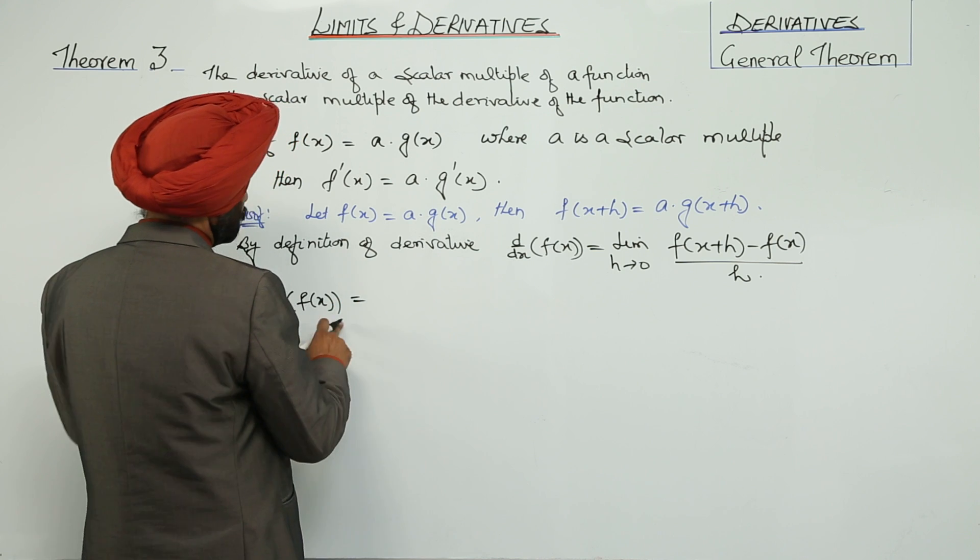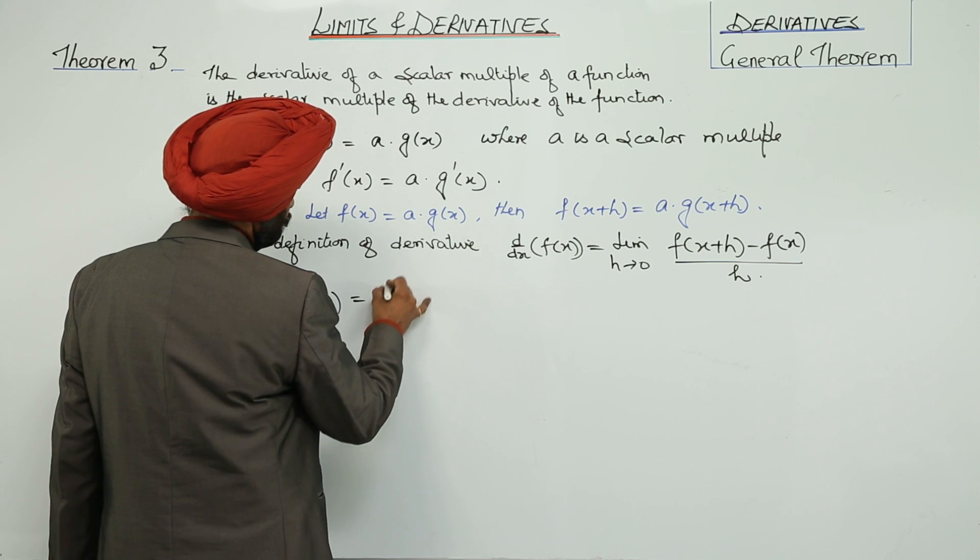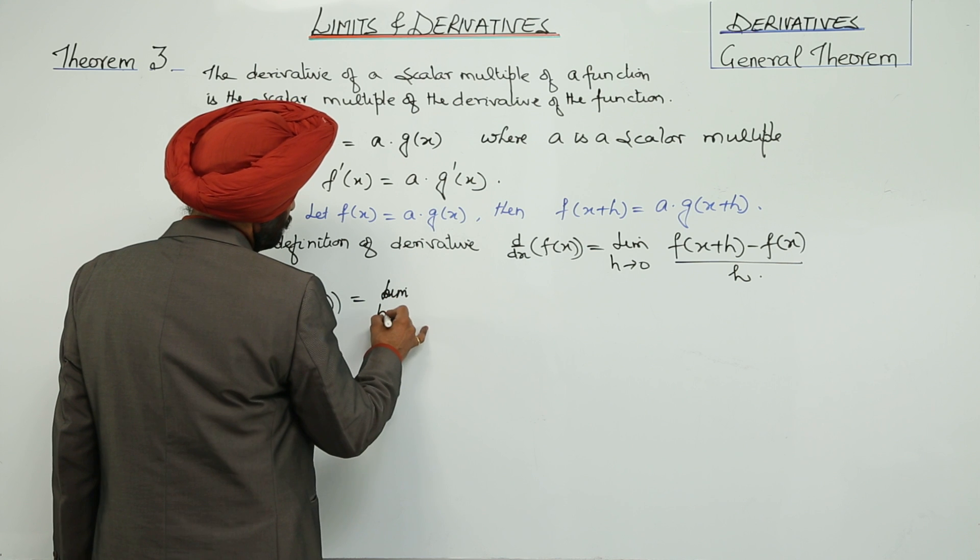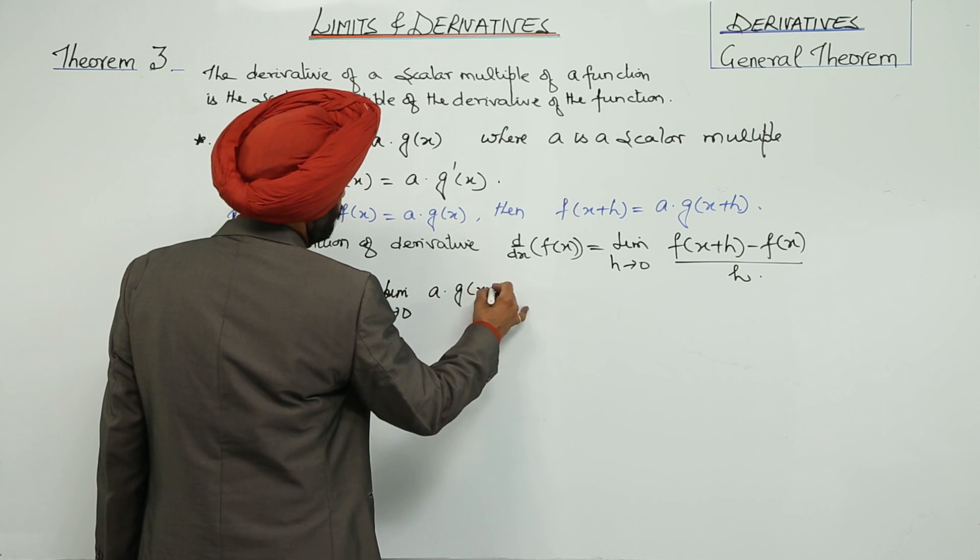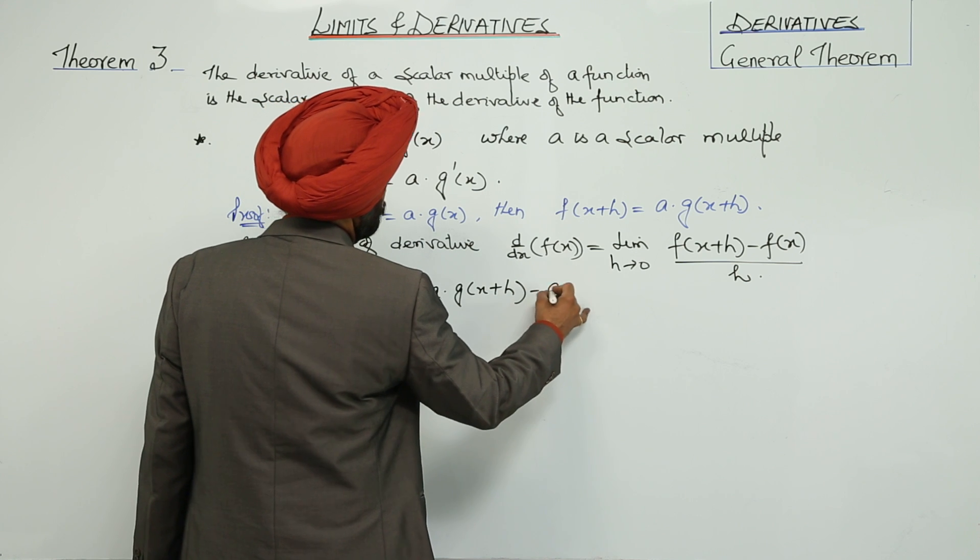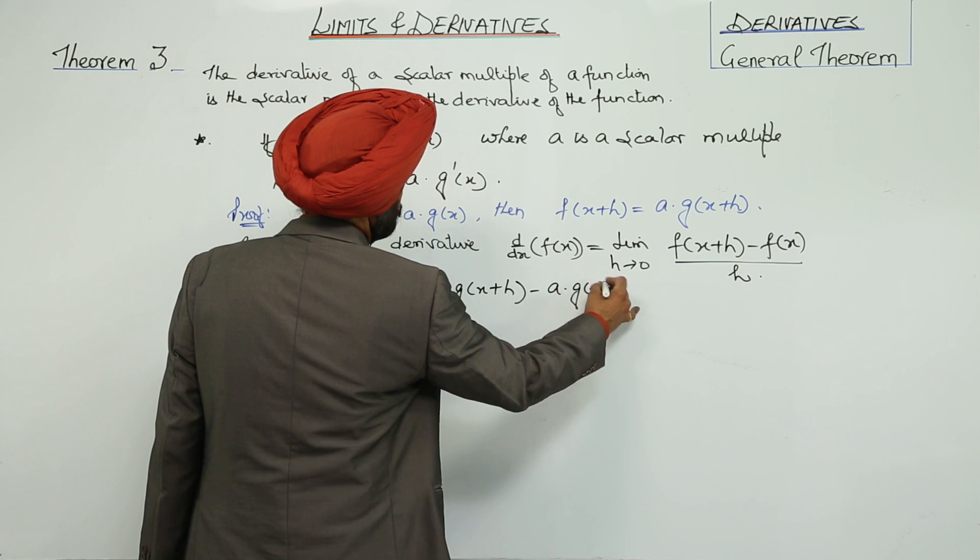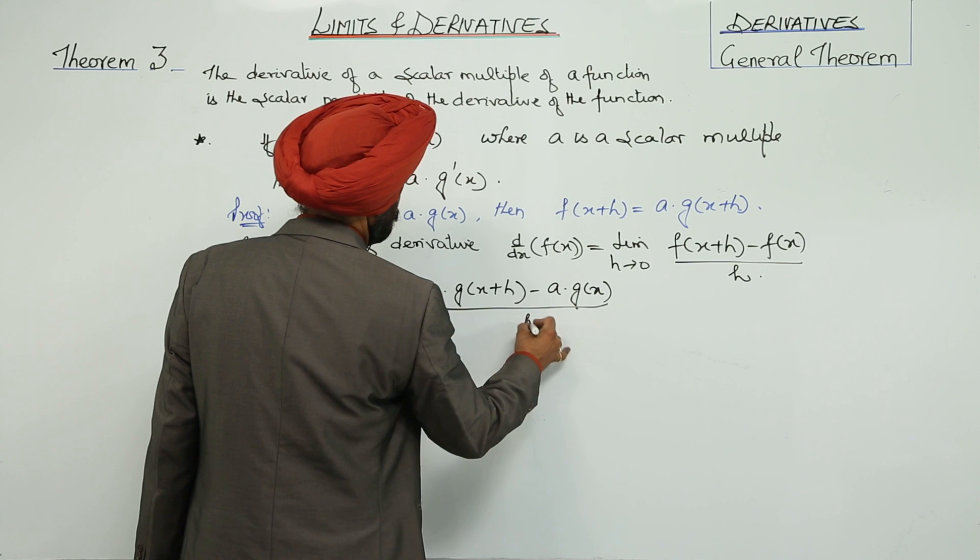This becomes the limit as h approaches 0 of [a·g(x+h) - a·g(x)] over h.